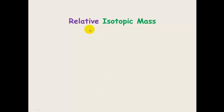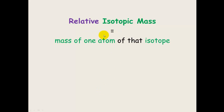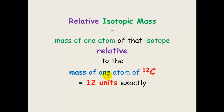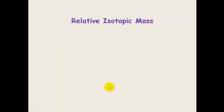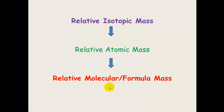We've already discussed relative isotopic mass, which is the mass of one atom of that isotope relative to the mass of one atom of carbon-12, which equals 12 units exactly. From relative isotopic mass we can work out relative atomic mass, and from there we can work out relative formula or molecular mass. If you don't know any of this, please go back and watch my other videos on relative isotopic mass — you need to know this to continue.